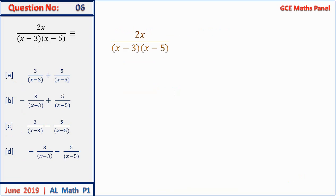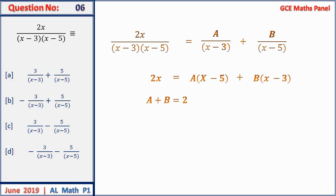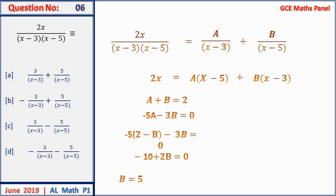Question 6: express as partial fractions. We write A over the first factor plus B over the second factor, then multiply through by (x − 1)(x − 5). Comparing coefficients: 2 = A + B and −5A − 3B = 0. Substituting the first equation into the second gives B = 5 and A = −3. The answer is B.